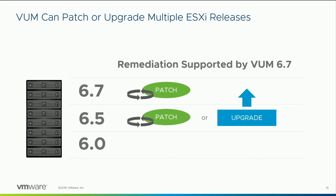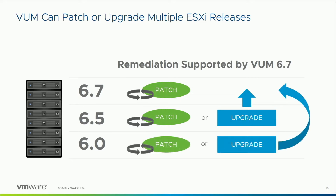You can keep your hosts on 6.5 if you need to, or you can upgrade to 6.7 — there are two different workflows. What about 6.0 hosts? If they aren't able to go up to the next version, they're still going to run just great. We still put out patches for 6.0 and you can still apply those patches using Update Manager. But for upgrades, you can only upgrade to the current matching version — so with VUM 6.7, you can only upgrade to 6.7, not from 6.0 to 6.5.